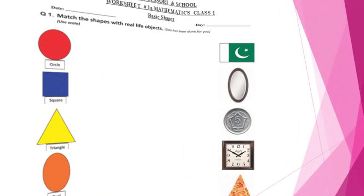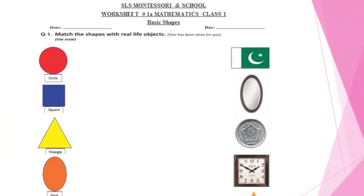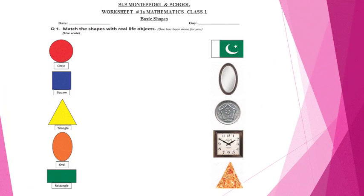Now I will read the question again: match the shapes with the real life objects. The first object is a flag. What is the shape of the flag? Yes, it is like a rectangle, so you will match it with a rectangle.